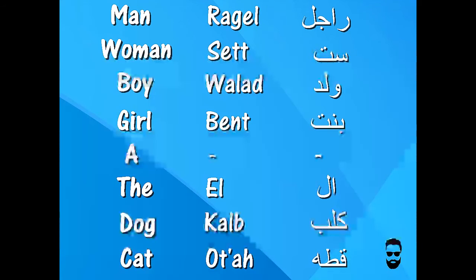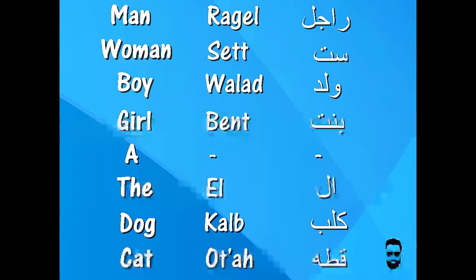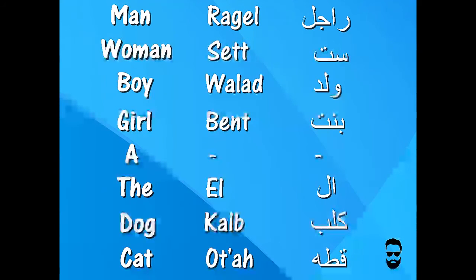About 'the': it doesn't change with the gender of the object, so 'the dog' is the same as 'the cat'. I've spelt it out as alif-lam, which is the correct spelling, but when you say 'al kalb' — the dog — you connect it, so that lam connects to the beginning of kalb. When it's linked it looks a lot like the lam in walad.